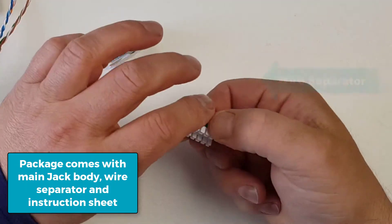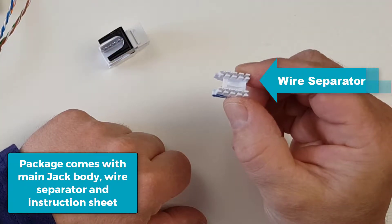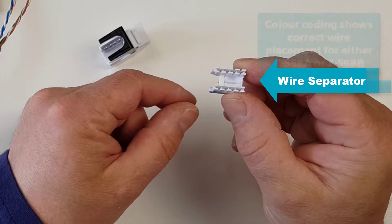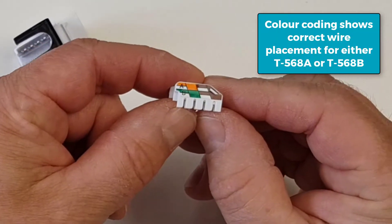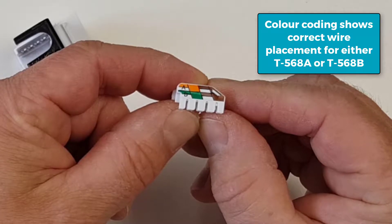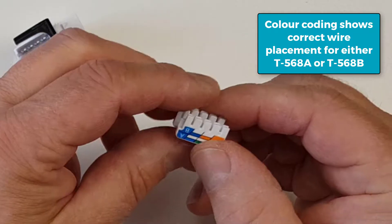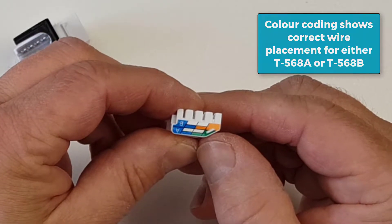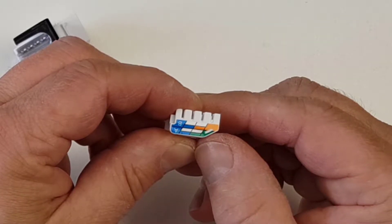It comes with a cable guide. That is where we can put our wires into their correct configurations, whether it is T568A or T568B termination that we are going to be doing. Today I am going to be doing a T568B termination.